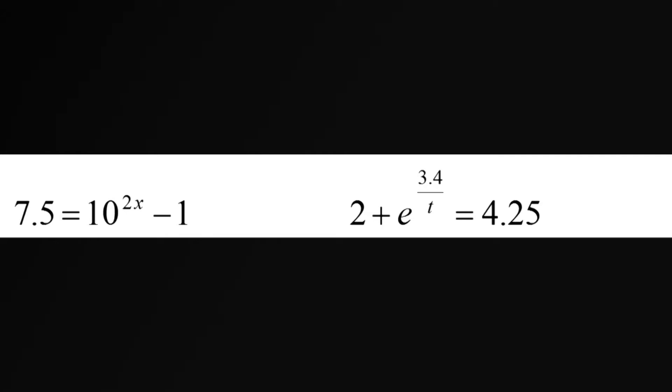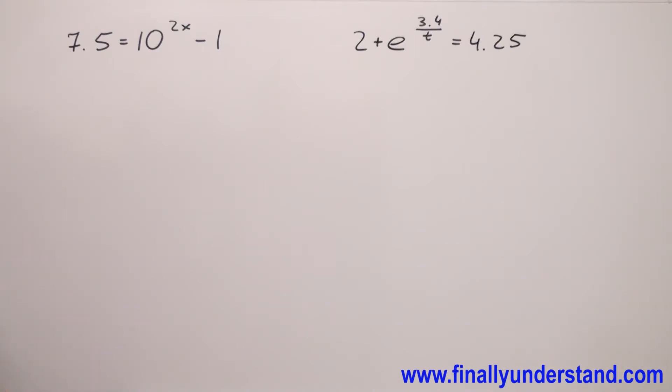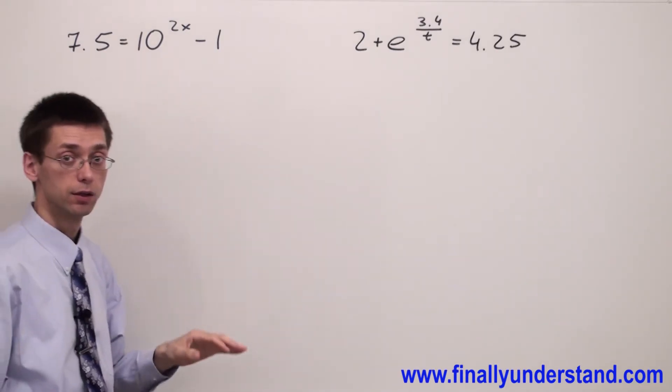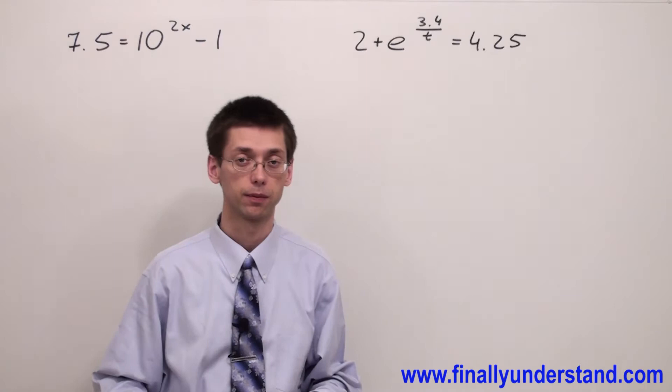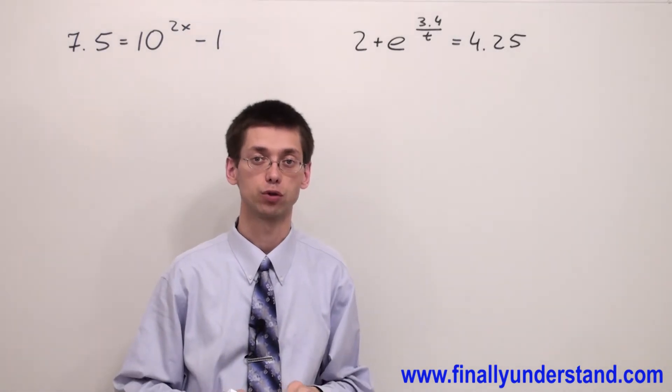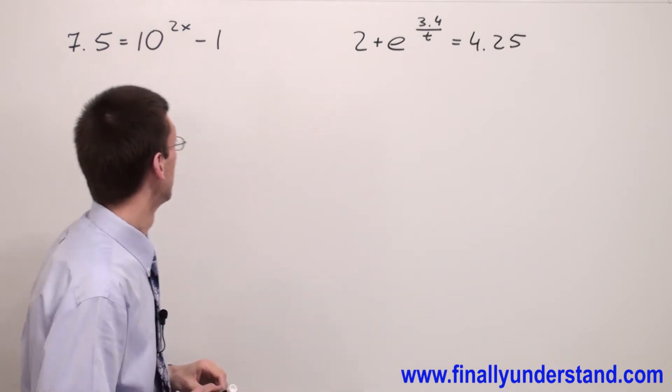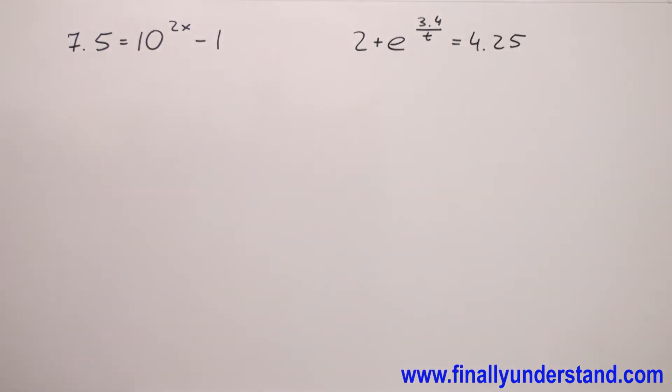Please take a look at the board and we have another two examples. The first problem has base 10, so automatically you're supposed to realize that we're supposed to use the common log for this problem. But before you're going to use logarithm, you're supposed to organize this equation a little bit. It means you have to combine the like terms.